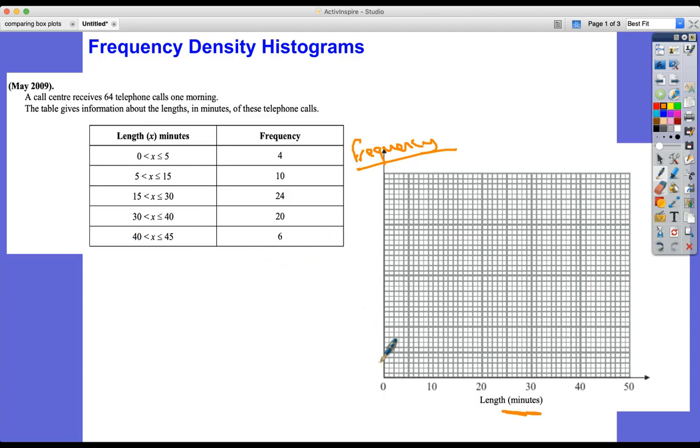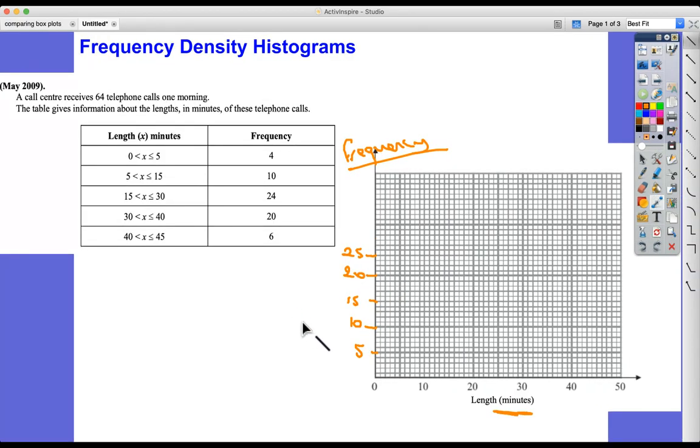They would say right, okay, we're probably going to be going up in fives to fit all these values on. So let's make sure we do that: 5, 10, 15, 20, perhaps 25. Okay, we might do something like that. And then we might come along and do the first one. So the first one is 0 to 5, being the length in minutes in this interval, and there's four phone calls that are between 0 and 5 minutes.